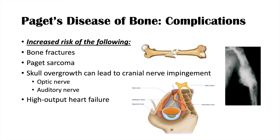High output heart failure can also be a complication of this condition. When there's a lot of building of bone, there is hypervascularization and new blood vessels form in areas of bony activity. The heart has to pump more blood to those areas. If there are multiple areas of hypervascularization throughout the body, the heart has a hard time keeping up with that high demand and can go into failure — hence high output heart failure.